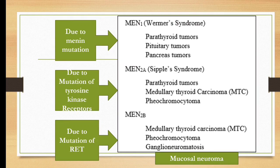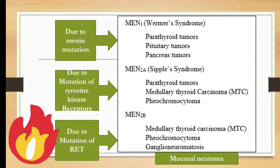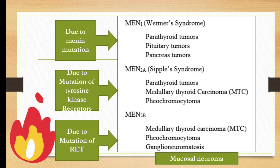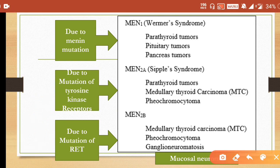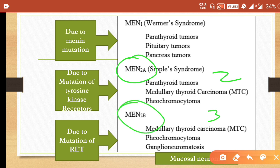This next part is very important. MEN syndrome is classified into four types. According to the newer classification, MEN2B from the older classification is now called MEN3, while MEN2A is now simply MEN2. So don't get confused between the old and new classifications.